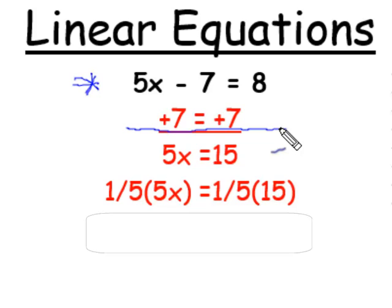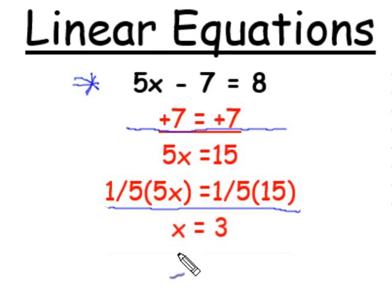And when we do that, we will have equal numbers if our original 5x minus 7 was equal to 8. 1/5 of 5x gives us x, 1/5 of 15 gives us 3.